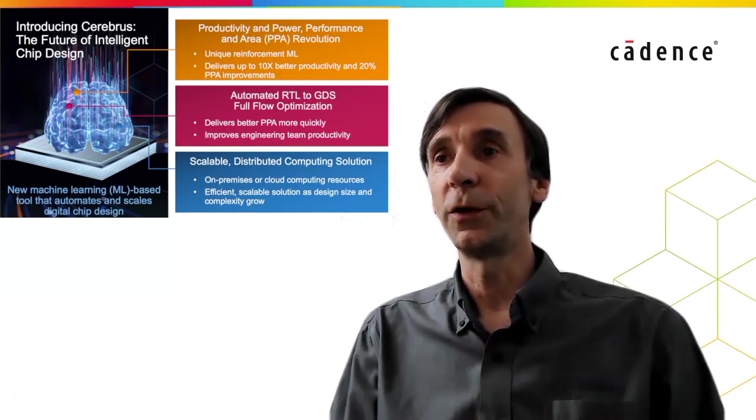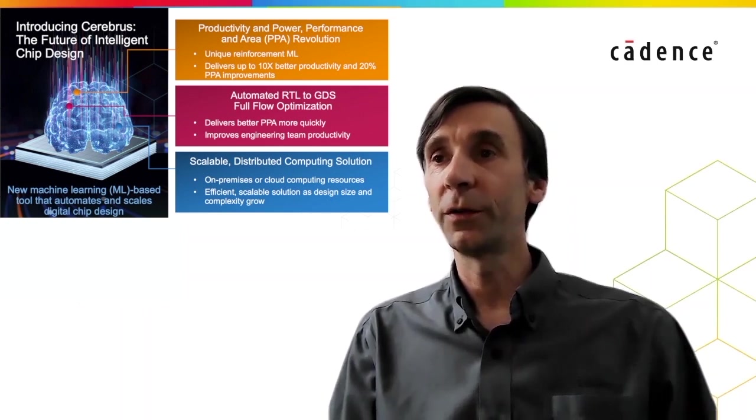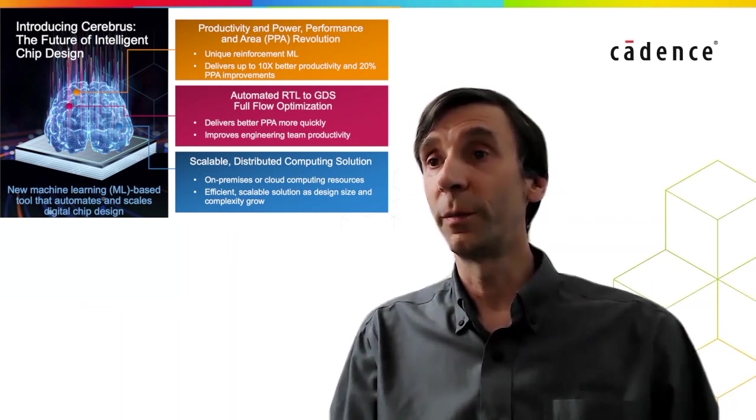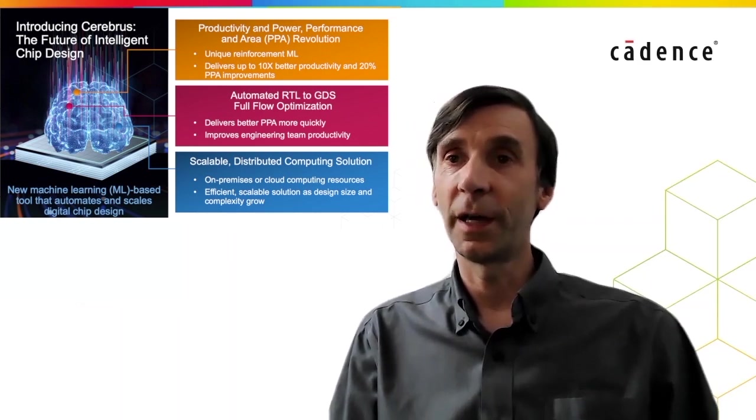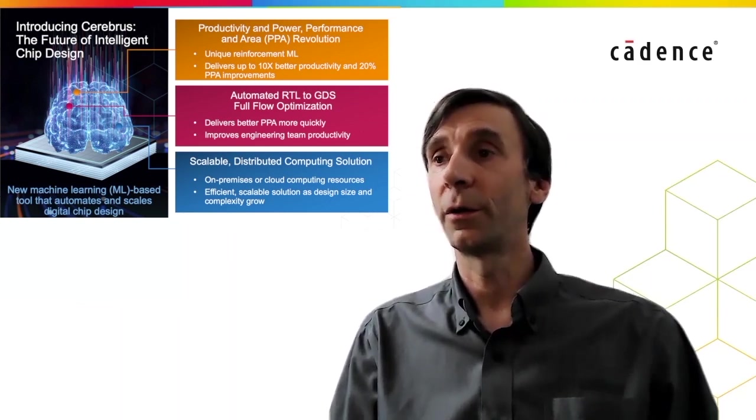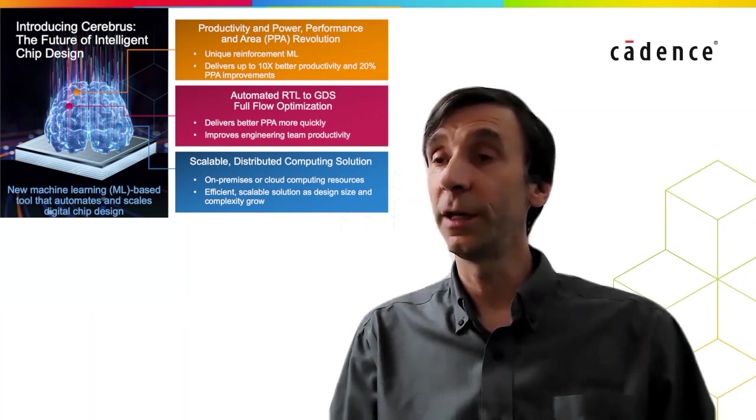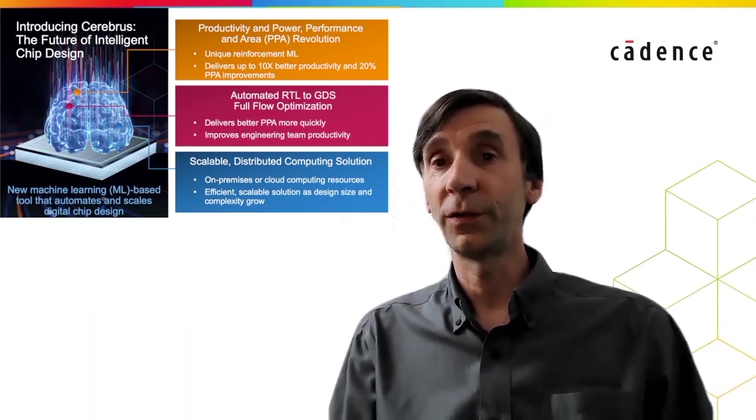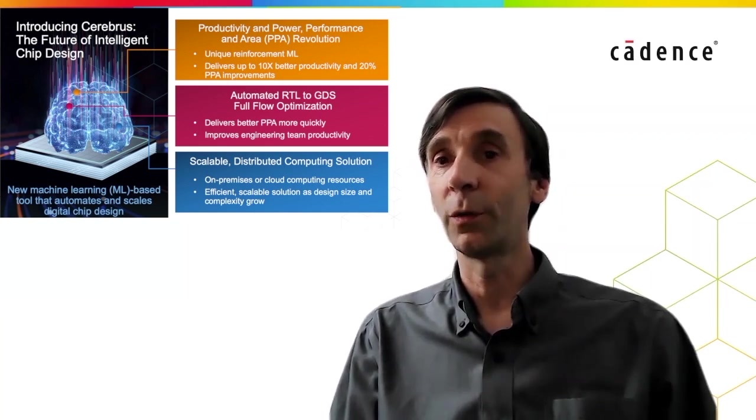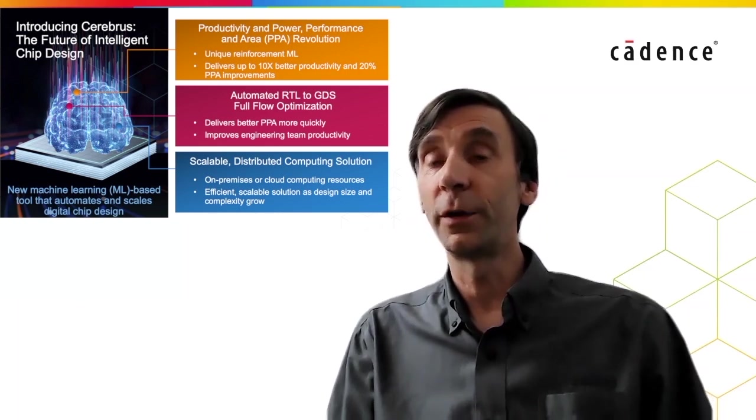Introducing Cerebrus, the future of intelligent chip design. Cerebrus is built on these massive compute and machine learning architectures. Cerebrus uses a unique reinforcement machine learning engine developed here at Cadence to deliver better design performance, power and area results. By using a completely automated machine learning driven RTL to GDS full flow optimization technology, Cerebrus can deliver better PPA results more quickly than a manually tuned flow, which improves engineering team productivity.